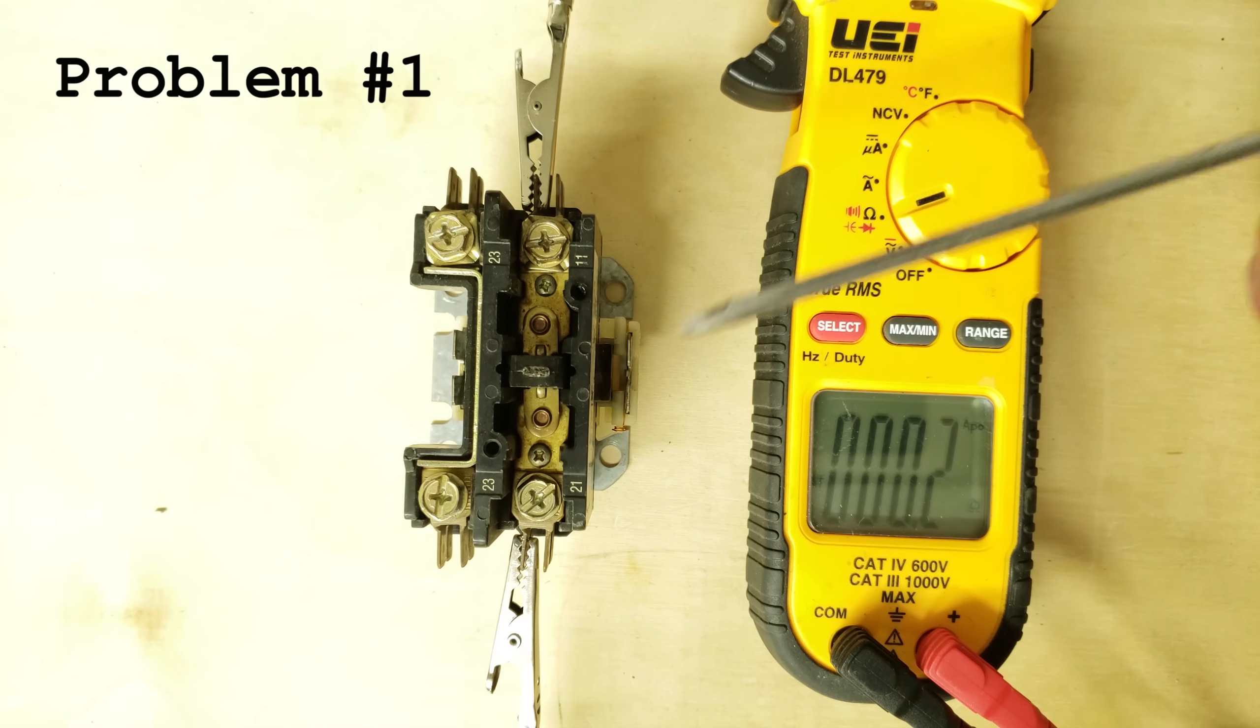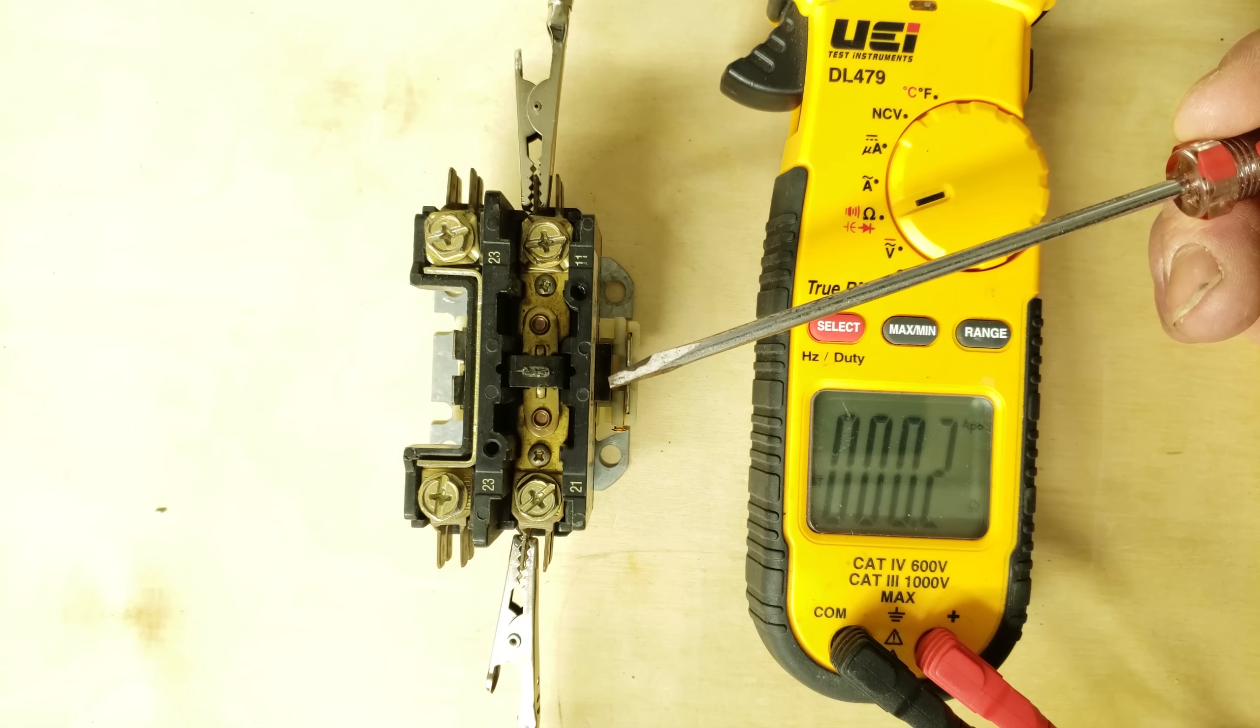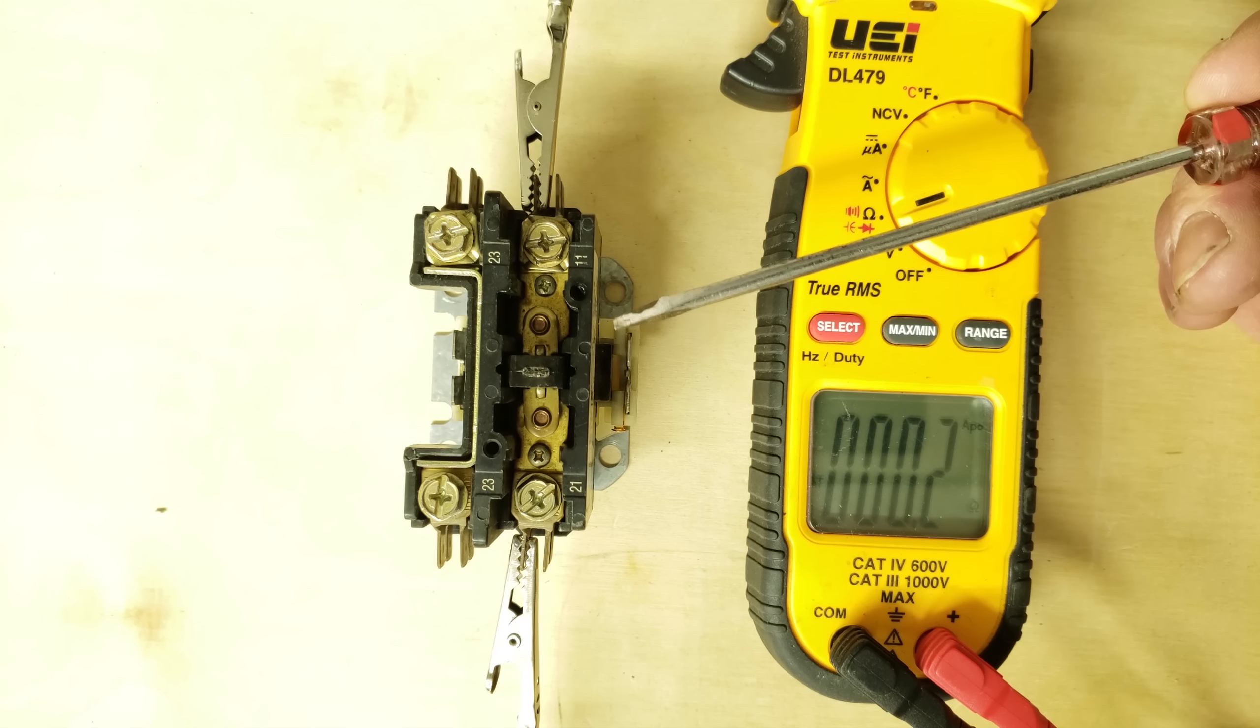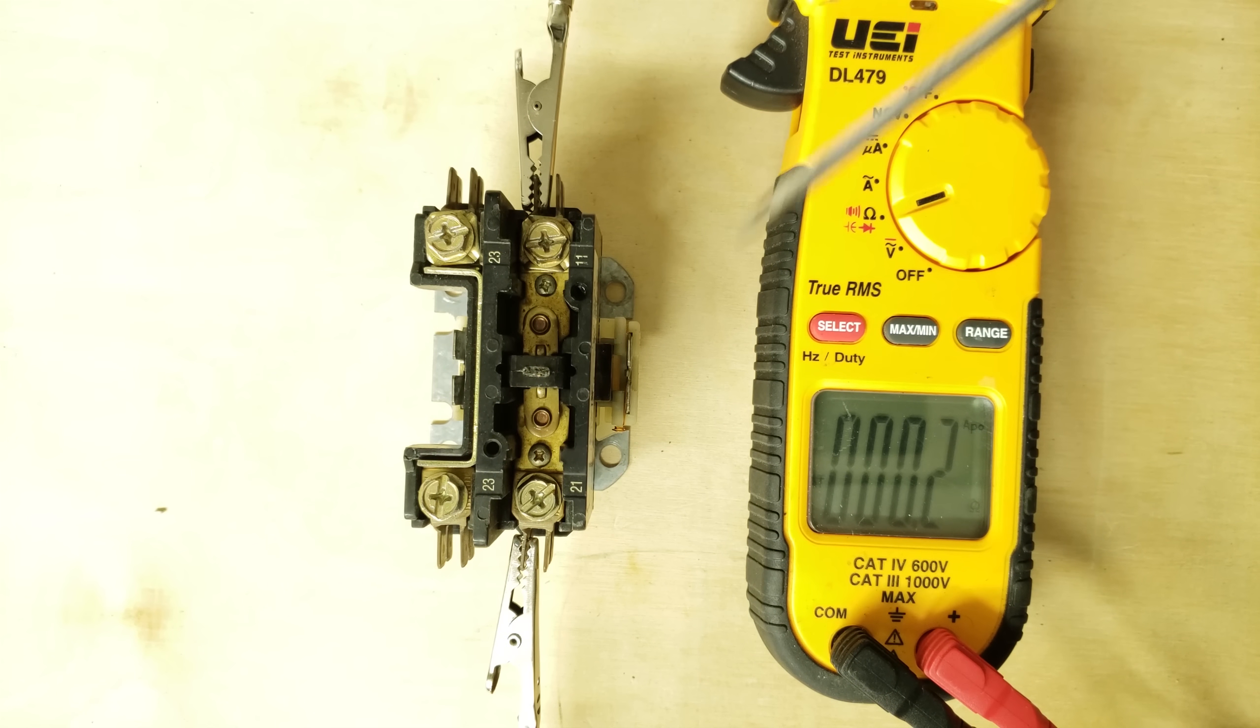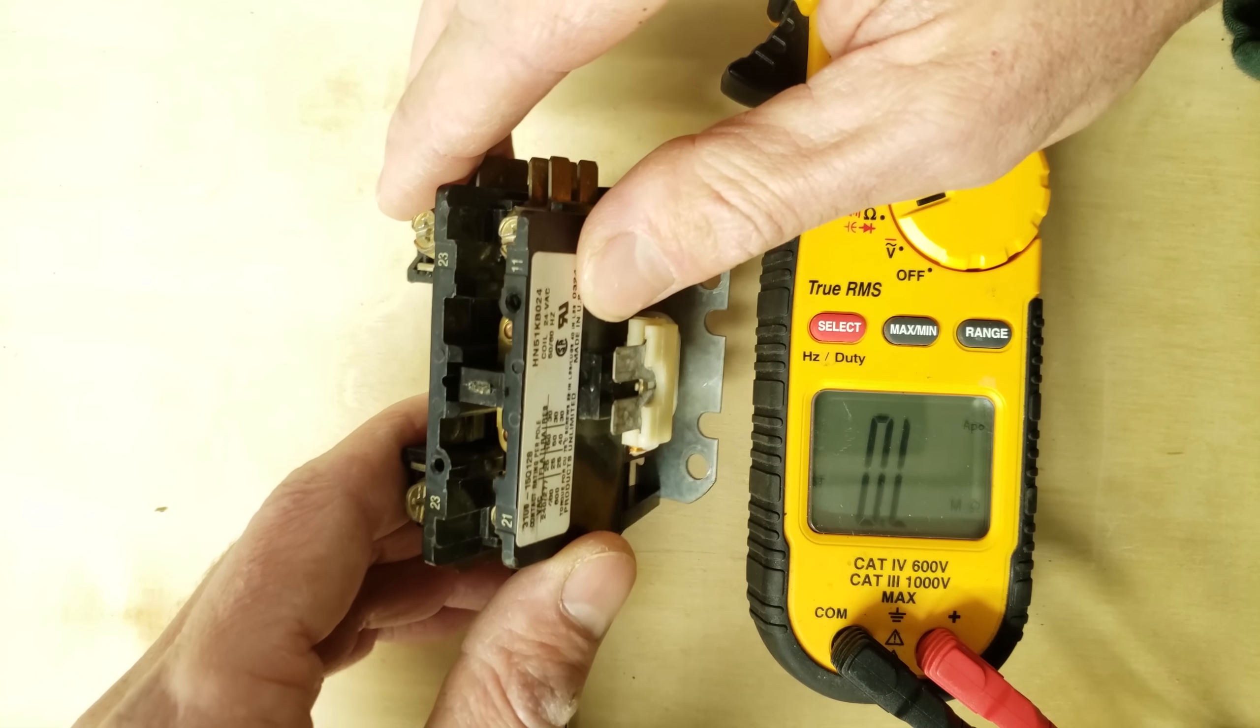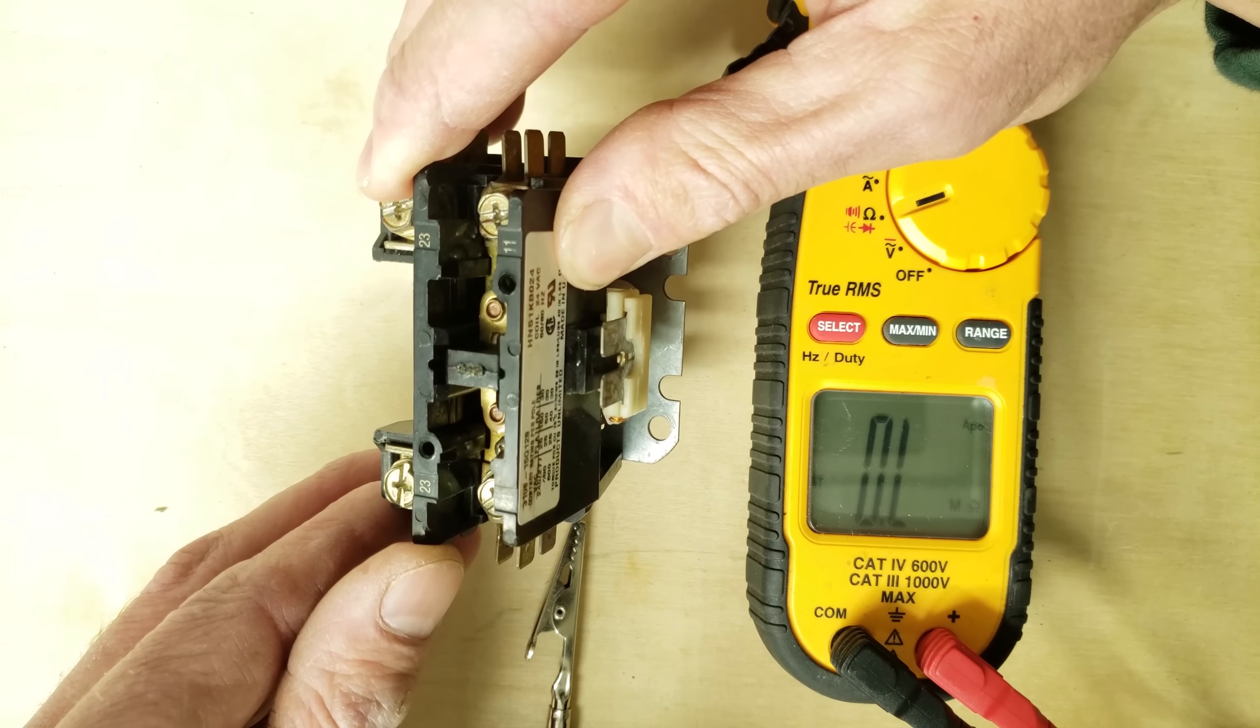Problem number one is when the contactor is stuck in the closed position and this happens when the contacts are welded together just due to high amperage. They melted and fused together and you see we're reading 0.2 ohms across this contactor. It is in the closed position even when we don't have any 24 volts on the side. You can see the contactor is actually stuck in that closed position.